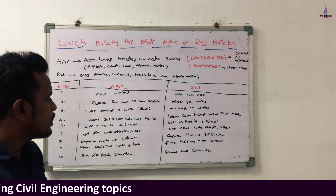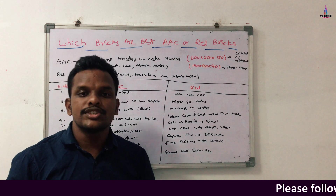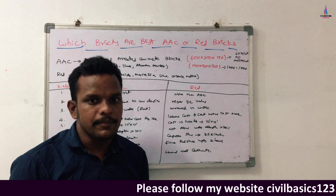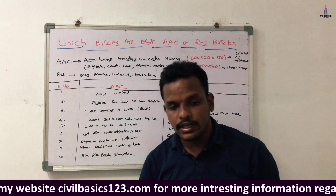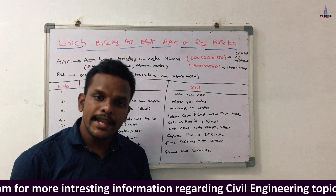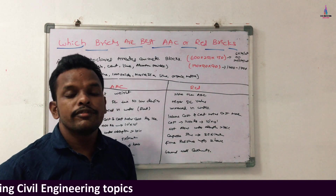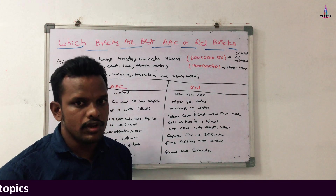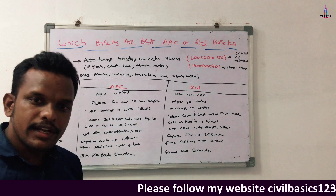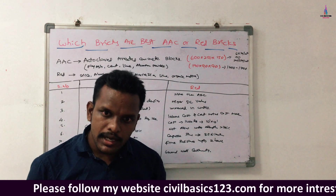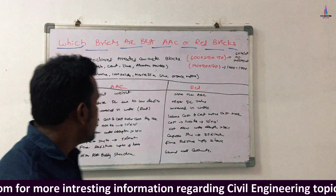Regarding construction cost: to construct a 10 feet x 10 feet wall using AAC blocks requires approximately 400 rupees in labor cost, whereas the same 10 feet x 10 feet wall using red brick blocks requires approximately 1400 rupees. From this we can clearly conclude that using AAC blocks reduces the weight of the structure, reduces the dead load, reduces labor cost, and reduces the overall project cost.